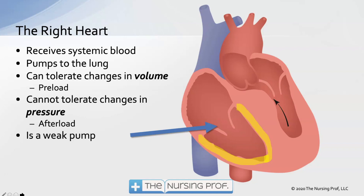The right heart receives the systemic blood. As you follow the blood through the circulation, it comes back through the veins, goes into the right atria, right ventricle, and then moves off into the lungs. Hemodynamically, we're getting preload from the systemic circulation filling the right side of the heart, then pumping into the lungs. The lungs are a high volume, low pressure system, as opposed to the arterial circulation which is a high pressure system. We can tolerate large changes in volume — the preload — into the right side, but we cannot tolerate large changes in pressure, and that's called the afterload. The afterload for the right side of the heart is determined by the lungs.